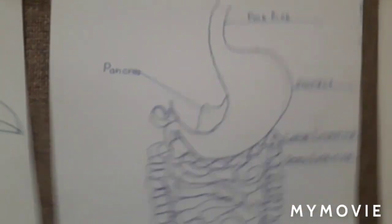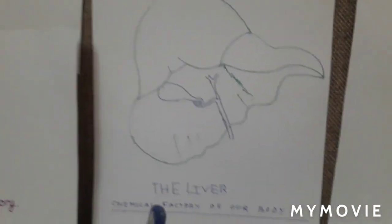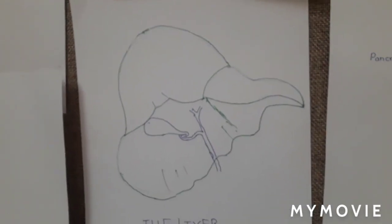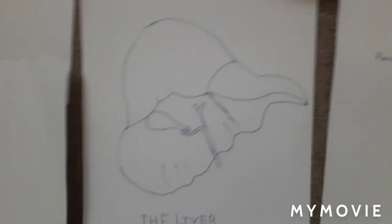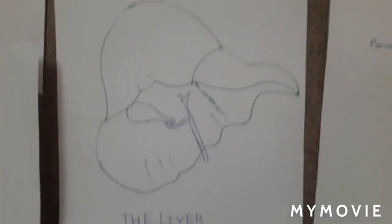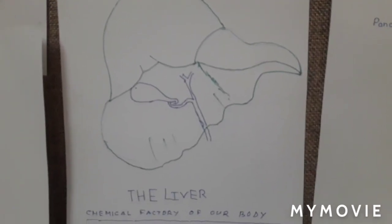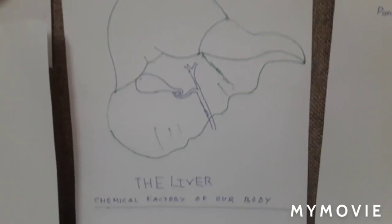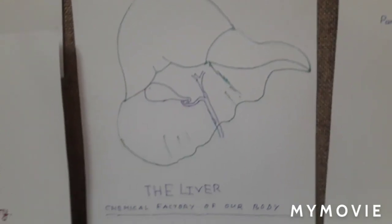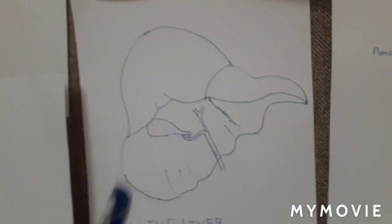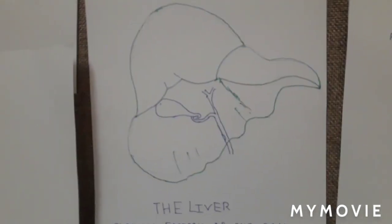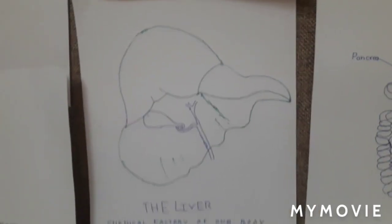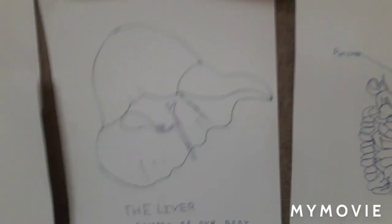Now let's look at the liver. The liver is the chemical factory of the body — it is responsible for processing chemicals that enter our body, such as acids. The liver is also the largest internal organ, which is an impressive fact! Friends, please like and subscribe to my channel to get more videos like this. Bye bye, have a nice day, stay home!